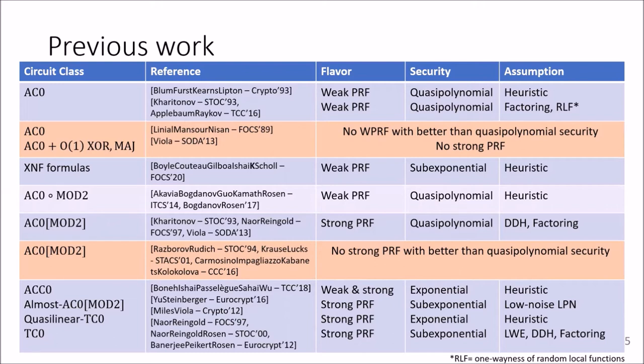And on the other hand, we know that above AC0 mod 2, there exists even strong PRFs. So we do have candidate constructions of strong PRFs. So in this work, we focus on the area in between, where so far there's only one candidate weak PRF with more than quasi-polynomial security.